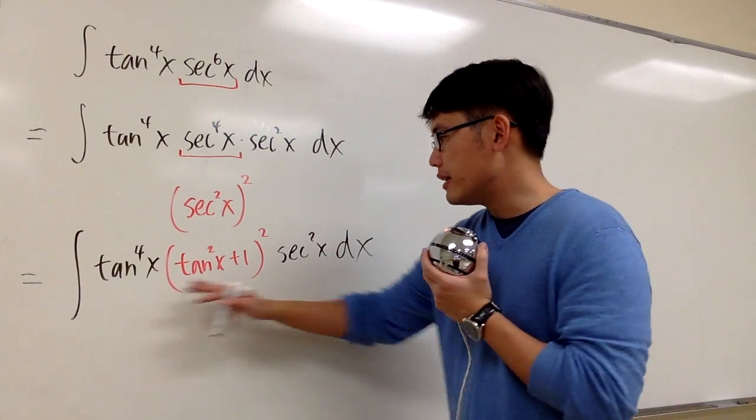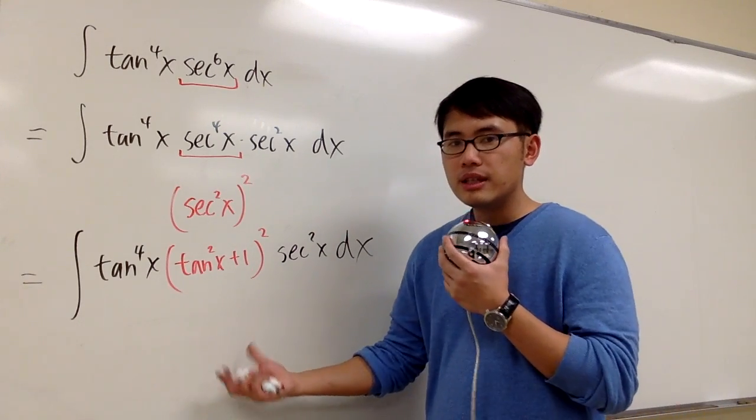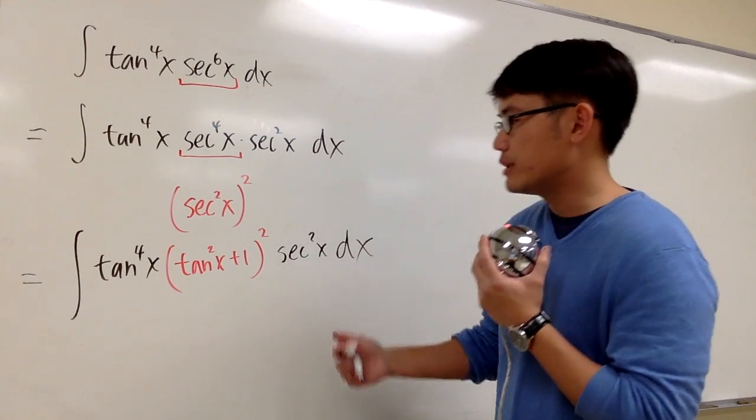And we are going to focus on this, and as you can see, this part and that part has nothing but just tangent, and then if we let u is equal to tangent, this is going to work out very nicely, and we'll do it.